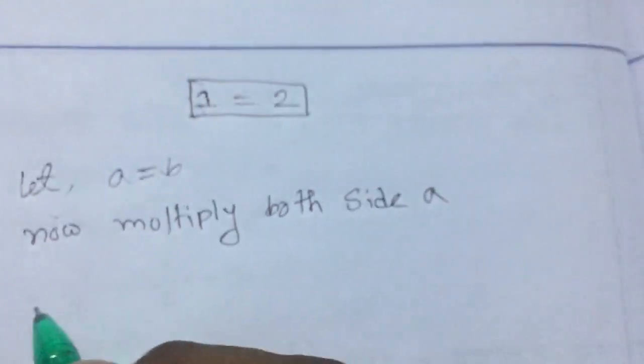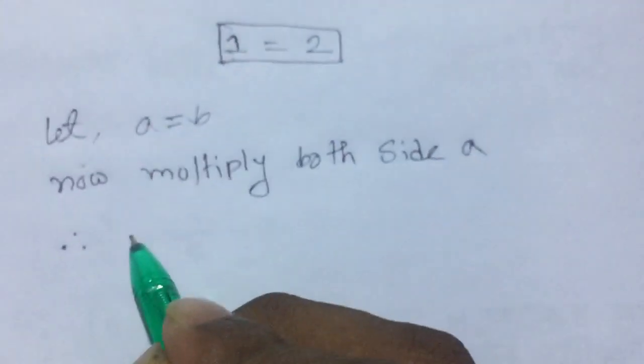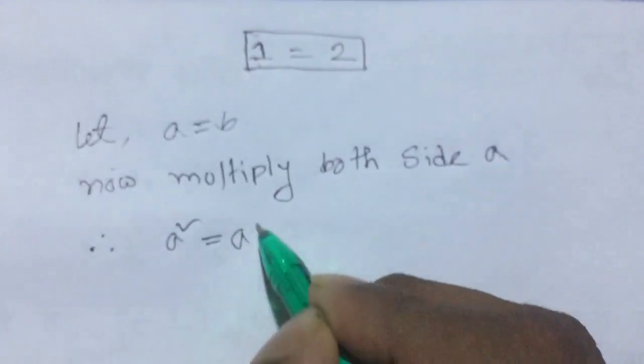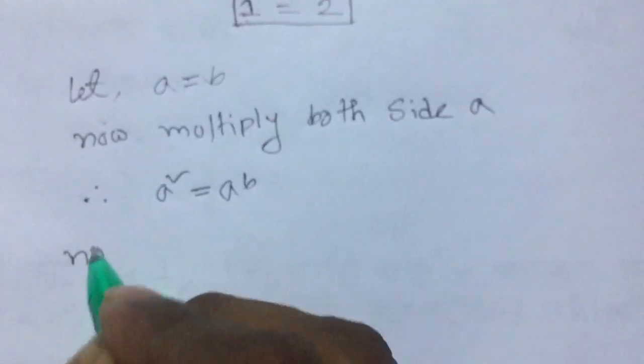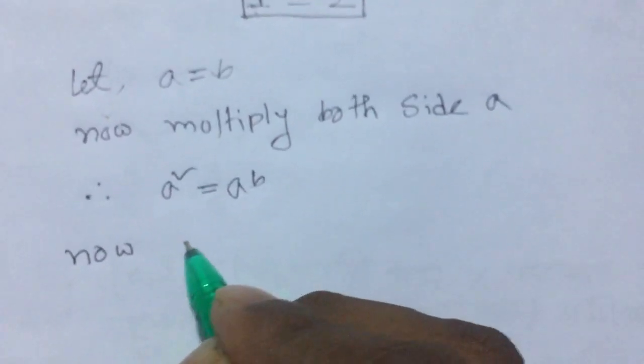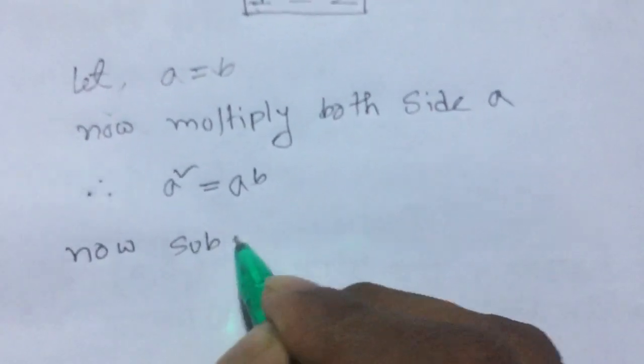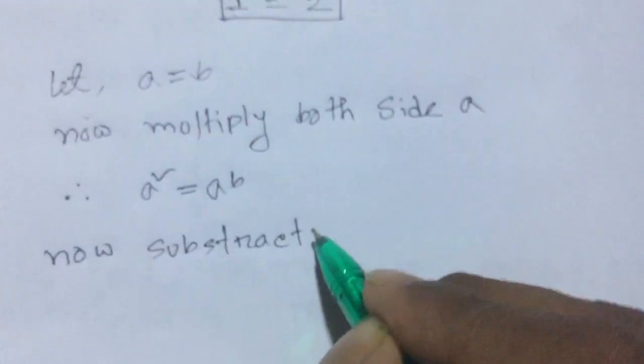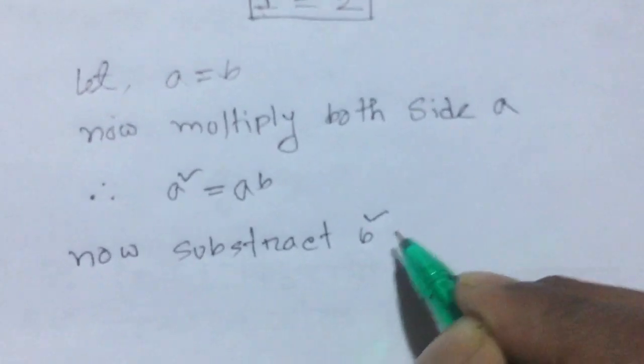So a squared equal to ab. Now subtract b squared.